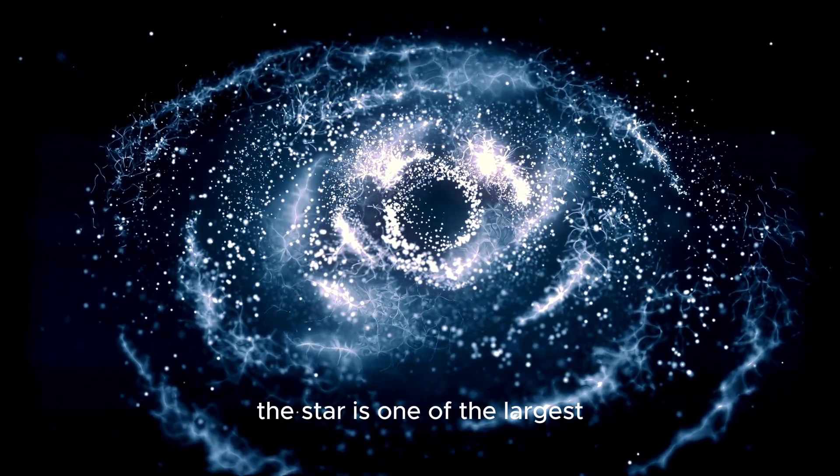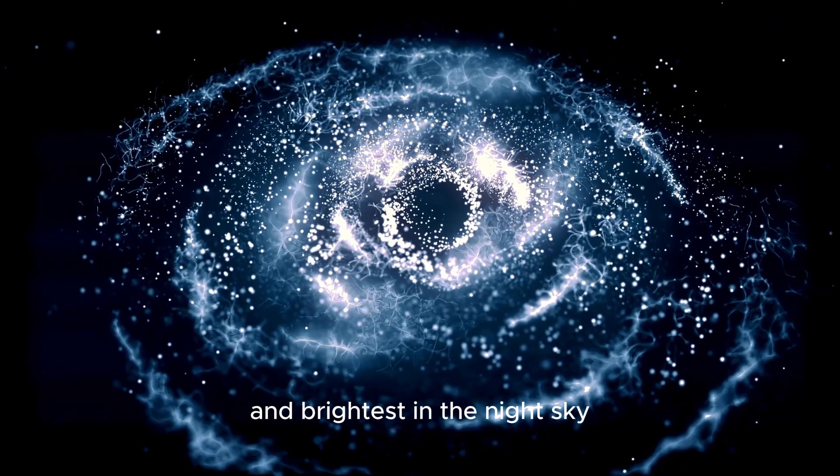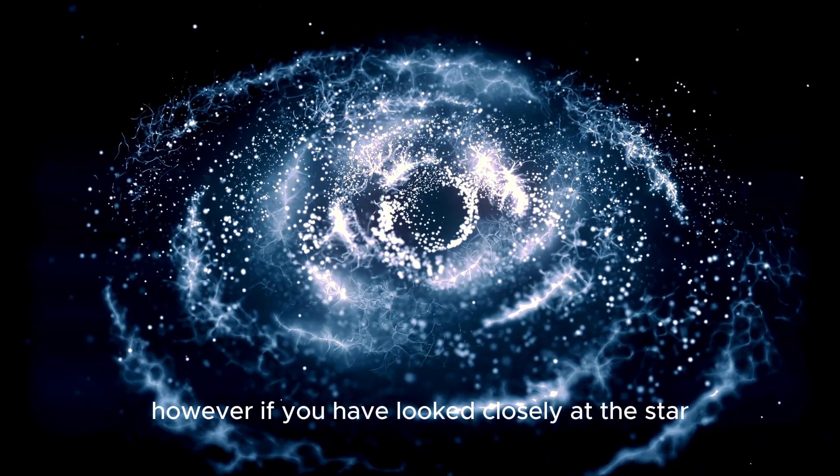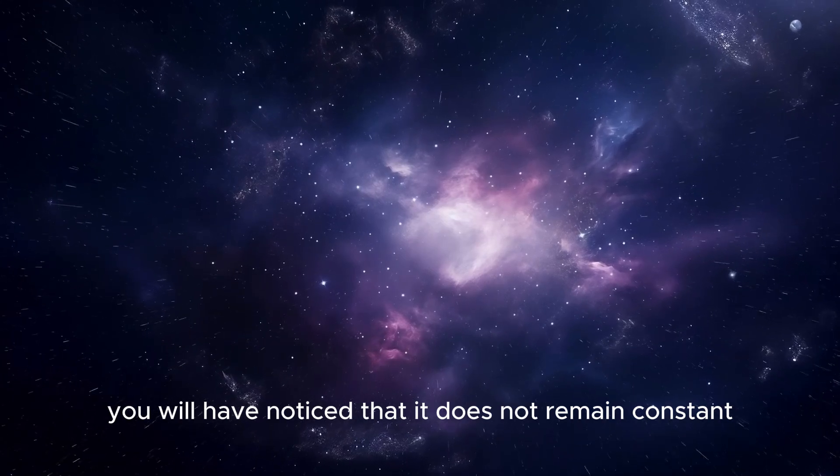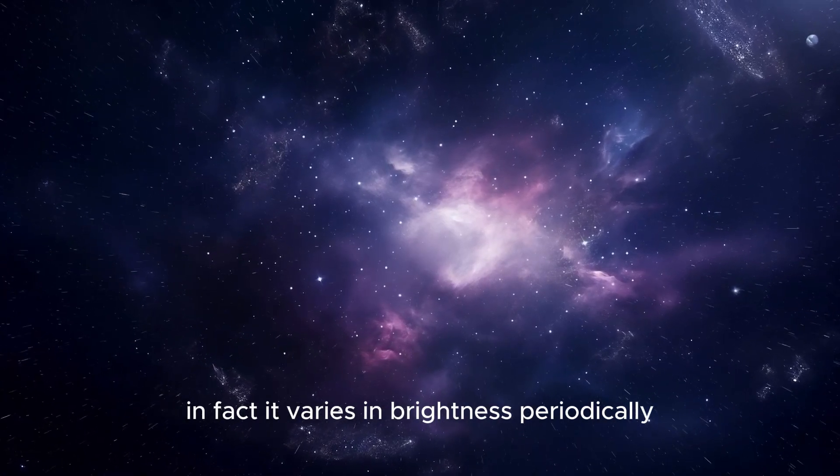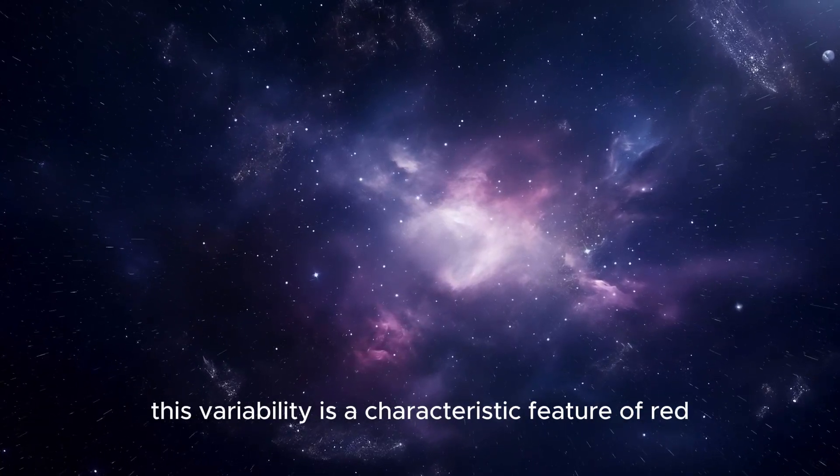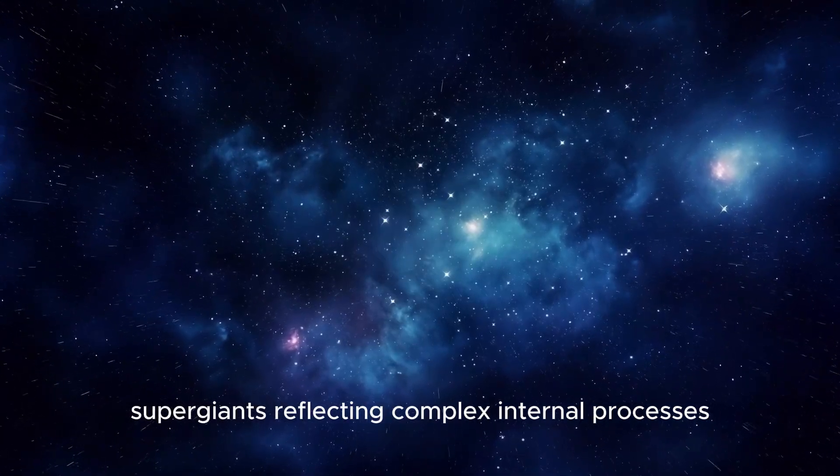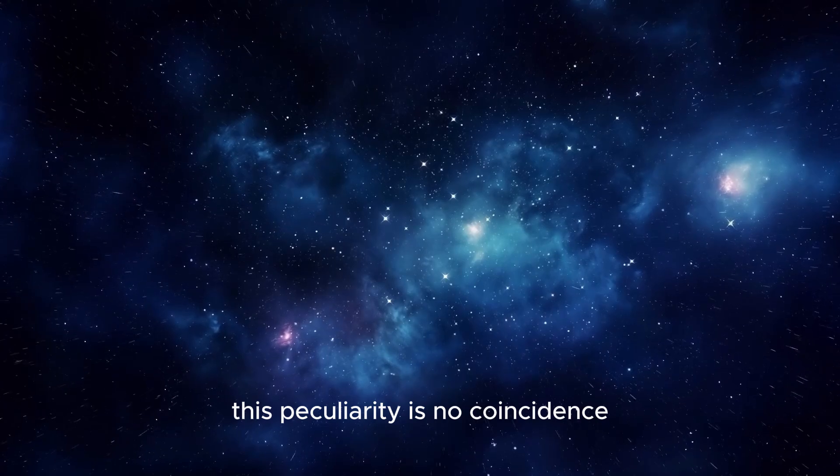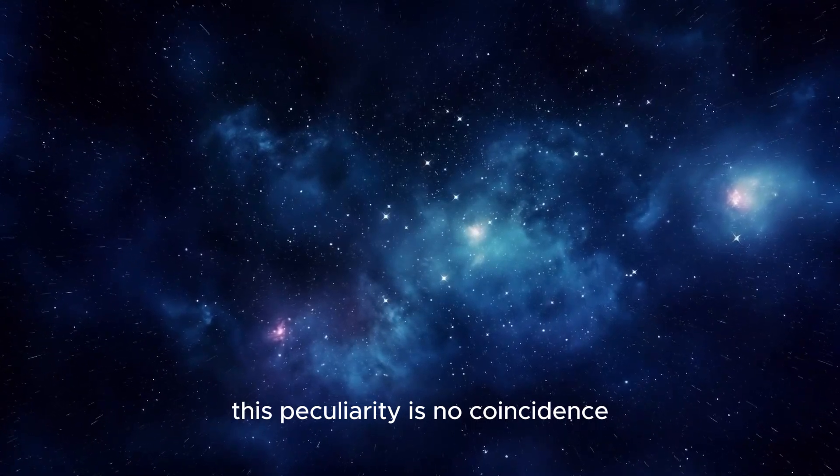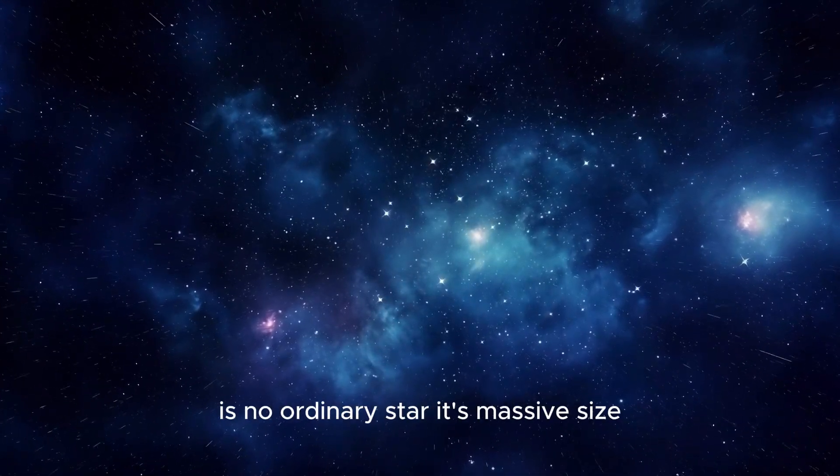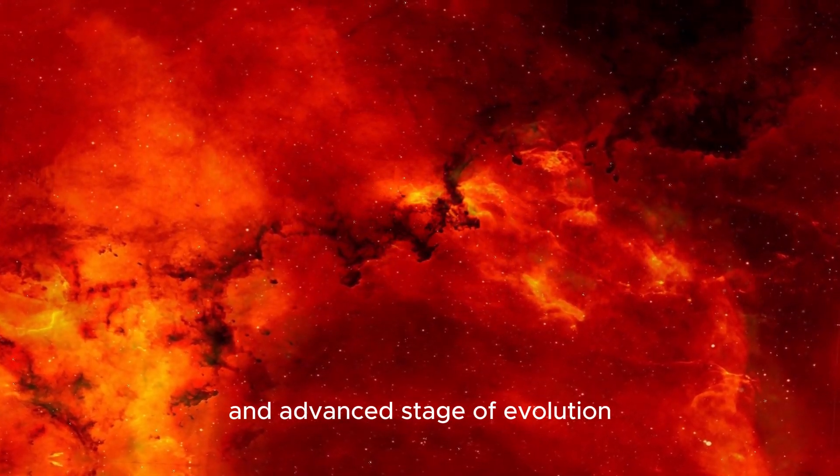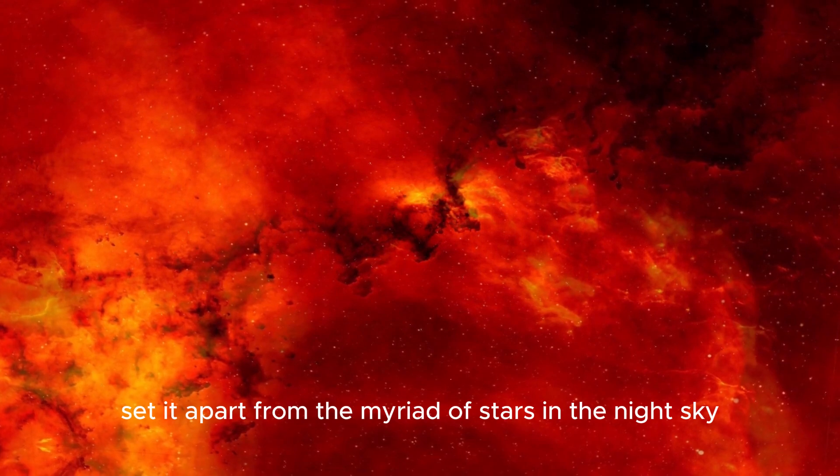The star is one of the largest and brightest in the night sky, making it difficult to miss. However, if you have looked closely at this star, you will have noticed that it does not remain constant. In fact, it varies in brightness periodically. This variability is a characteristic feature of red supergiants, reflecting complex internal processes. This peculiarity is no coincidence. Betelgeuse is no ordinary star.